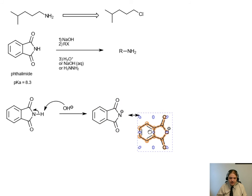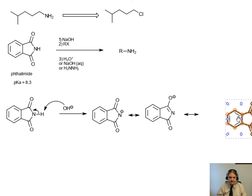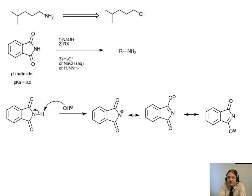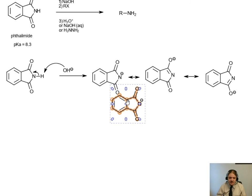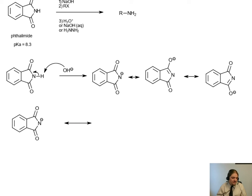And then this phthalimide anion is resonance stabilized. And we can delocalize that negative charge into either of the oxygen atoms through resonance. And that gives us a much more stable conjugate base, which means the compound itself is more acidic. We can deprotonate it with sodium hydroxide. We don't have to resort to a super strong base like sodium amide or lithium diisopropoamide or whatever.